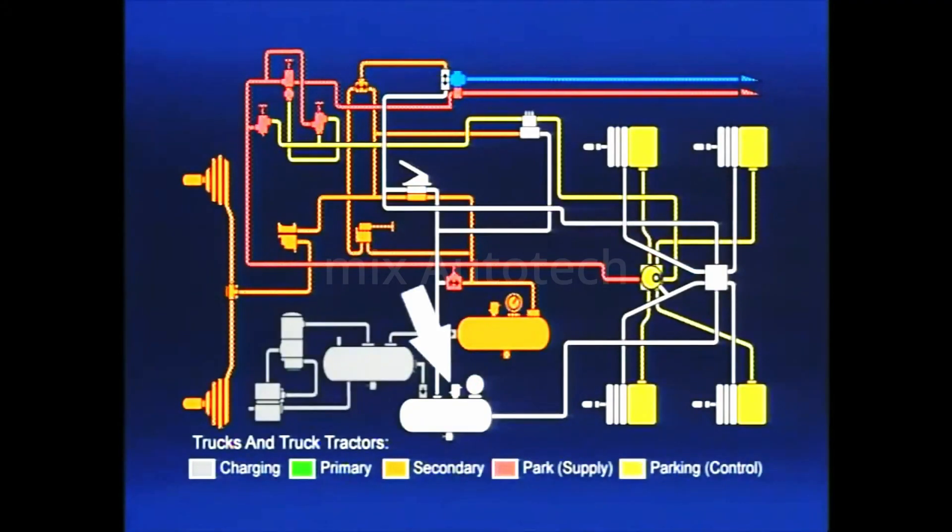When the driver receives a low pressure warning and applies the brakes, only the front axle service pressure will be available. The front axle brakes apply normally, and the same air pressure is delivered to the control port of the SR1.